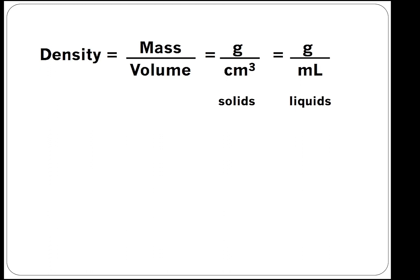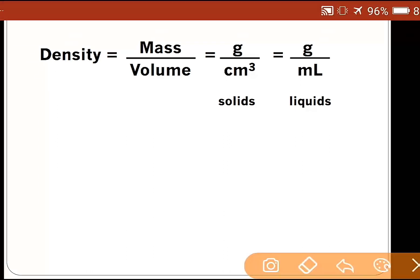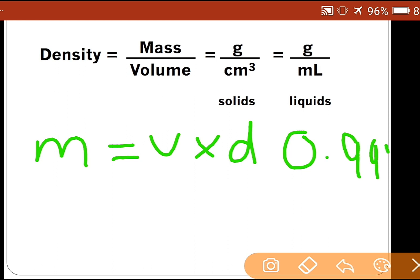Mass is equal to volume into density. We know that density of pure water is about 0.998, so we will consider it as one. So thousand ml into one gram per ml gives mass of one liter water as thousand grams.